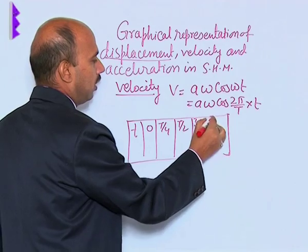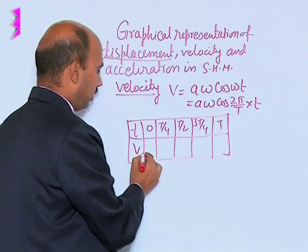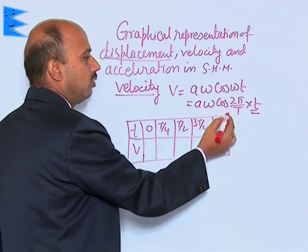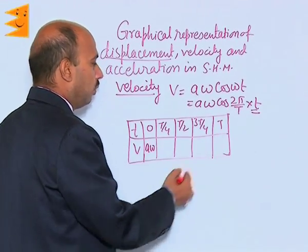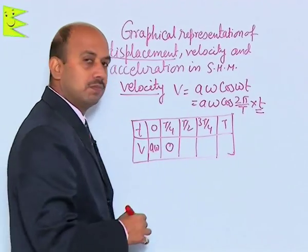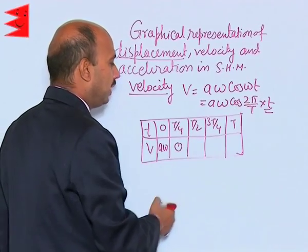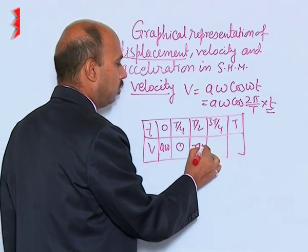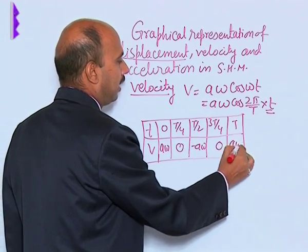And this side we will be getting velocity. When we are putting t equal to 0, cos 0 that is 1, that is a omega. When we are putting t by 4, we will be getting 90 degree, that is 0. When we are putting t by 2 again, we will be getting cos pi, that is minus 1, that is minus a omega, and 0, and it is equal to here a omega again.